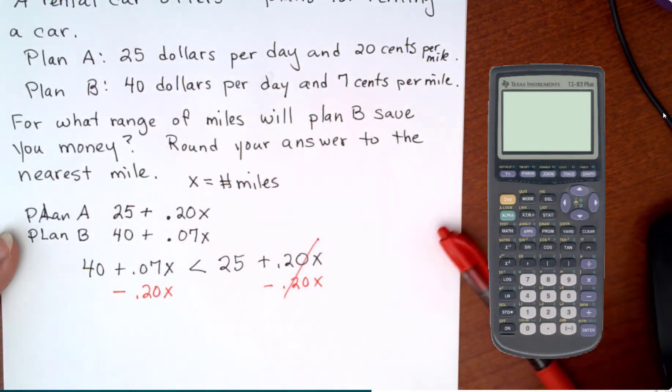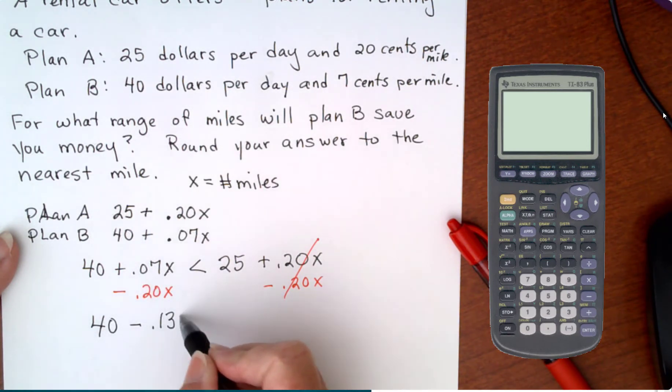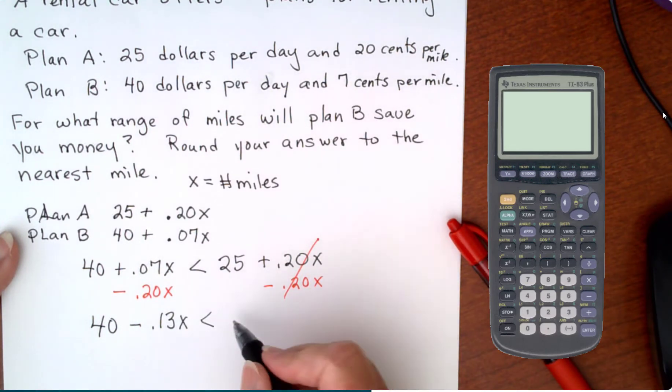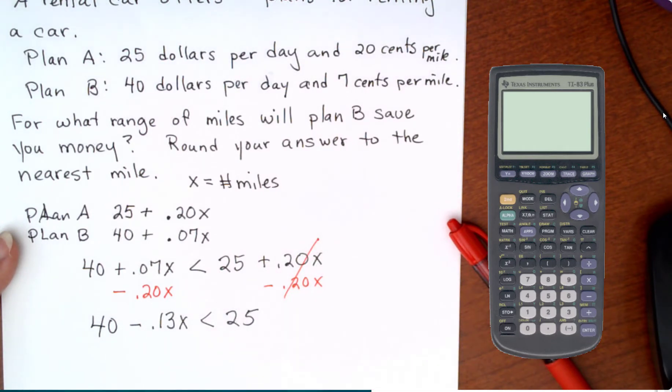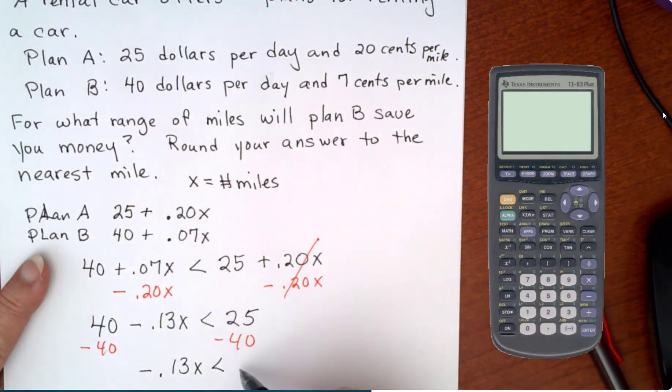And just do that in your calculator or in your head. It's going to give us negative 0.13x. And then we're going to isolate the x. So we are going to get rid of the 40. It's positive, so we have to take it away. So we have negative 0.13x is less than, and this will be a negative 15.